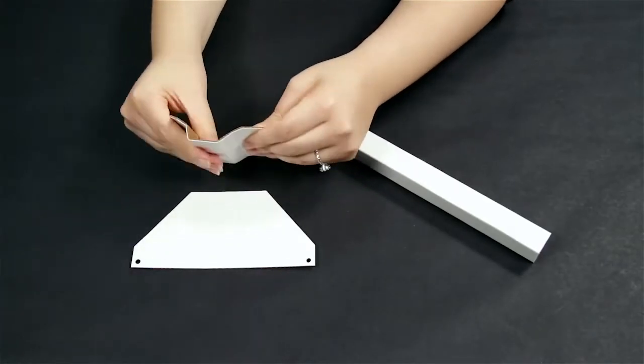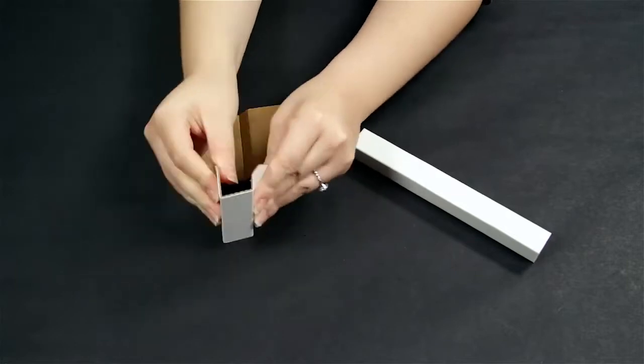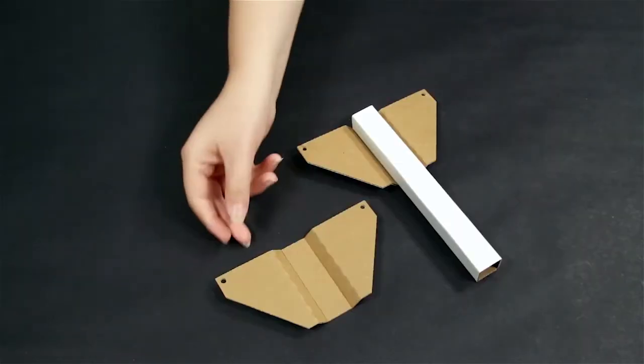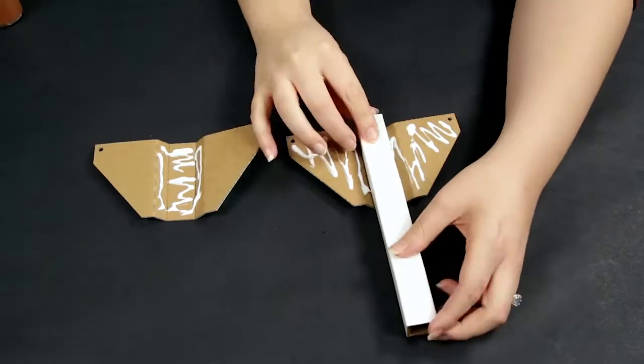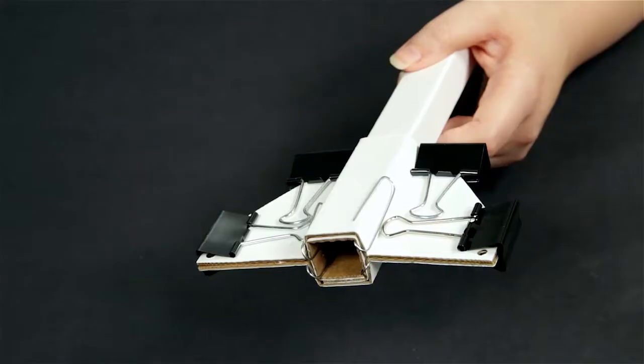Step 5: Fold both part C's together around the square tube you just made. The wide end should line up with the end of the tube. Glue all of the parts and clamp together with binder clips.